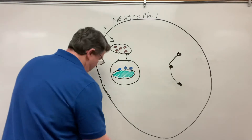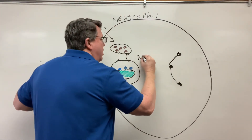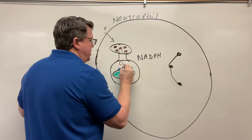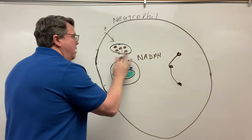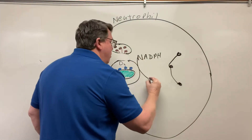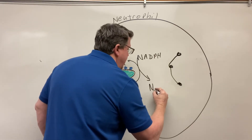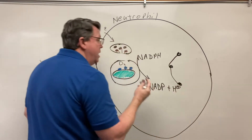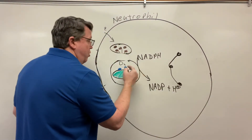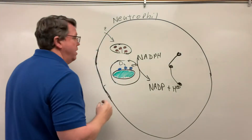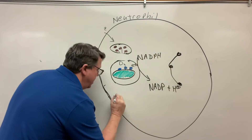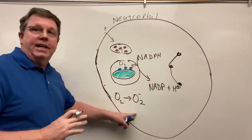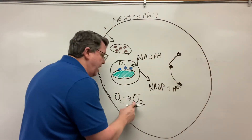So what's going to happen is I have something inside of the cell called NADPH. Inside of here I'm going to have oxygen. The NADPH is going to become NADP+ and hydrogen. It's going to release electrons inside this phagosomal cell. What's going to happen now is this oxygen is going to go from being oxygen to what we call a superoxide — it has extra electrons on it now. So it's a superoxide; it's a free radical.